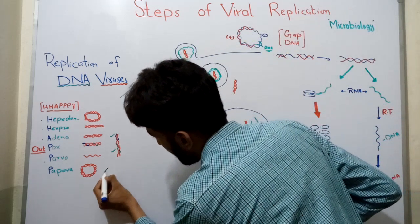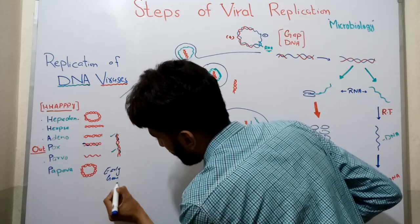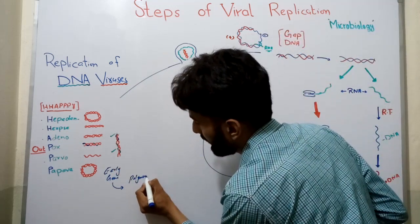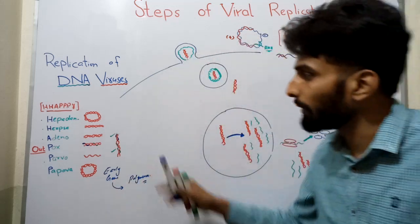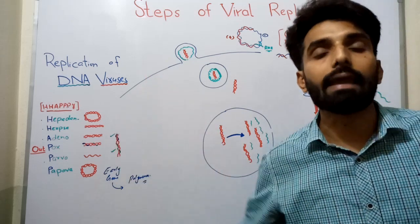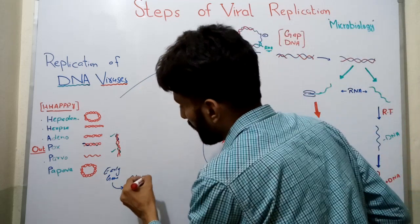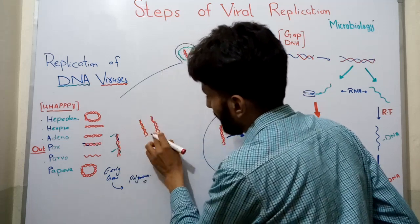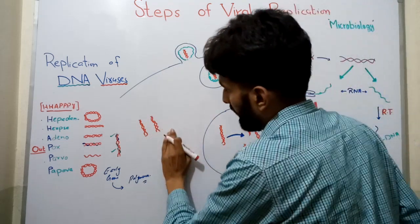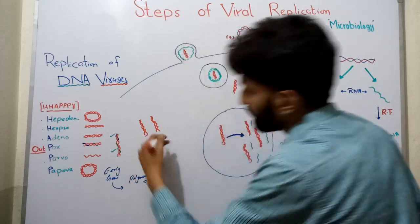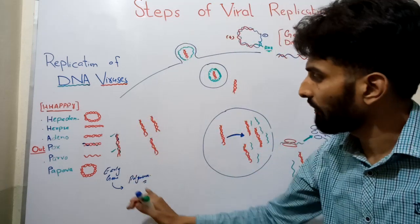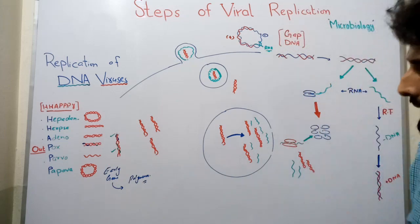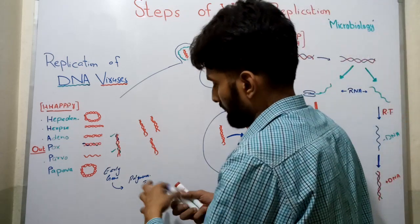When the early genes get transcribed and translated, functional proteins and enzymes like DNA polymerase will be formed. This polymerase will help the DNA to replicate and make different copies. The whole process of replication is explained in my other videos titled DNA Replication. So DNA copies are formed by the enzyme polymerase, which itself came after the transcription of early genes.